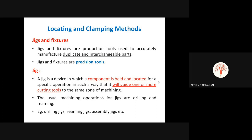Jigs locate the workpiece and guide the cutting tool. The usual machining operations for jigs are drilling and reaming. Drilling jigs, reaming jigs, and assembly jigs are different types. Drilling is the method of making holes. Boring is enlarging the inner diameter or size of an existing hole using a boring tool. Reaming is a finishing operation using a reaming tool to finish the surface of a hole.